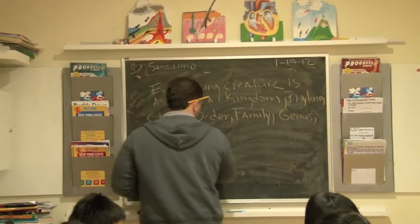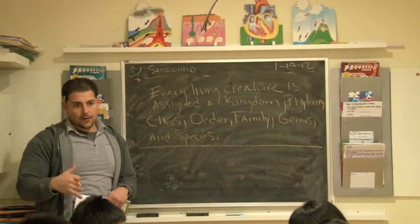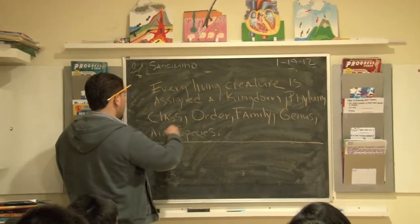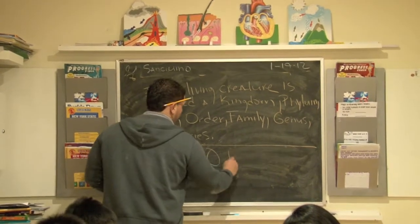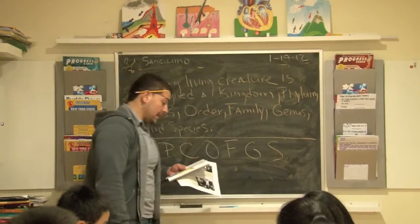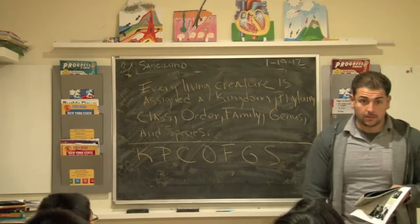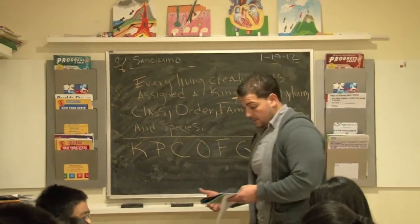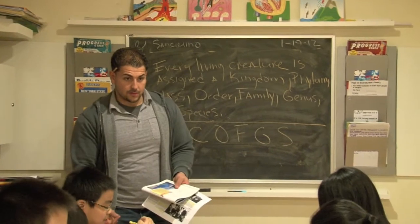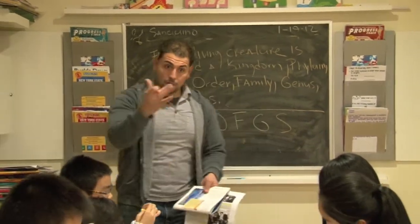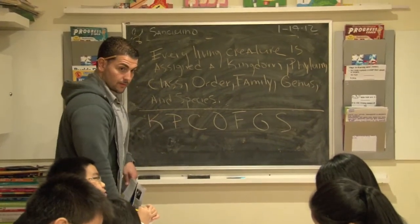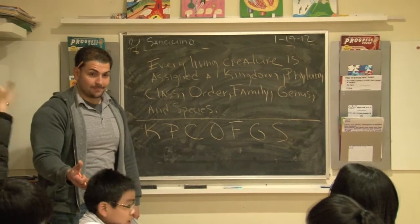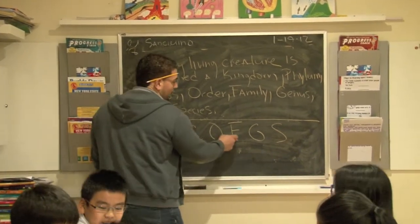Every living creature is assigned a kingdom, a phylum, a class, order, family, genus, and species. That's a lot to remember, so I want to create an acronym to help us remember. We've got K, P, C, O, F, G, S. The easiest way to remember this is: King Philip creates order from general stuff. Everybody say that — King Philip creates order from general stuff. Is that an easy way to remember? It doesn't have to make sense.